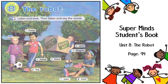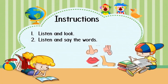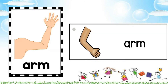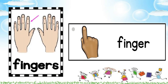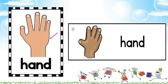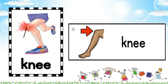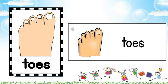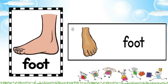What have you got there? A robot kit! Great, let's make a robot! Now say the words: 1. Head. 2. Arm. 3. Fingers. 4. Hand. 5. Knee. 6. Leg. 7. Toes. 8. Foot.